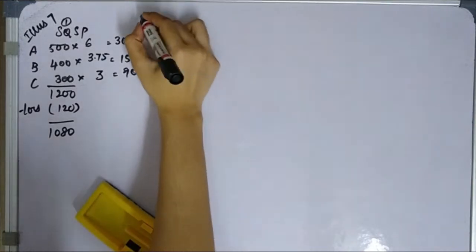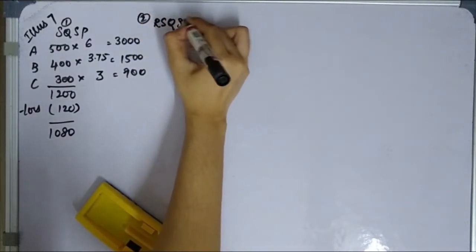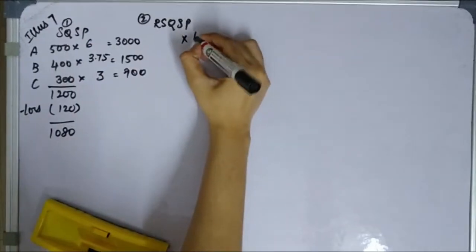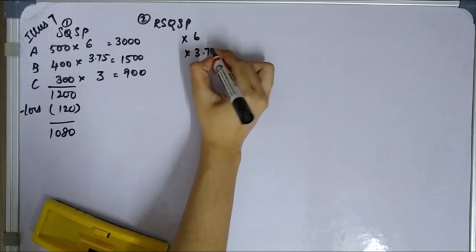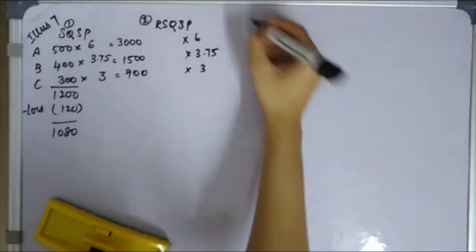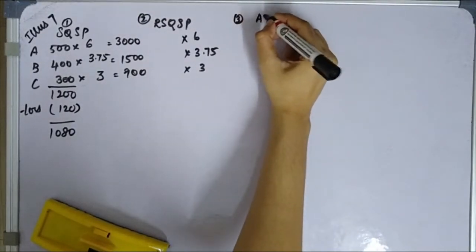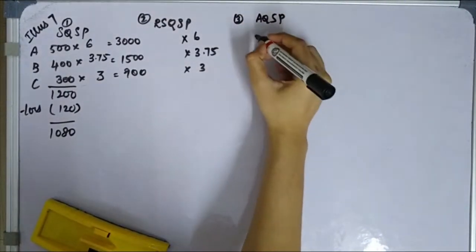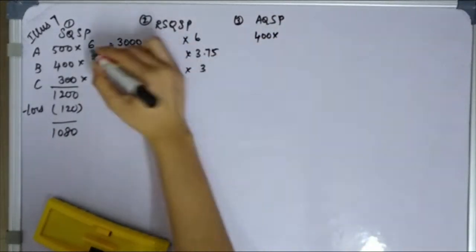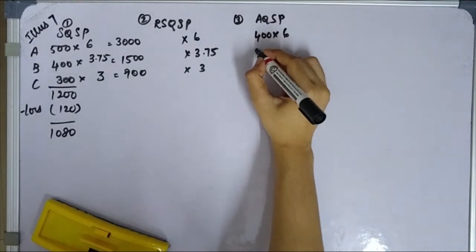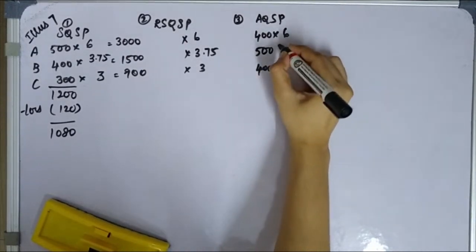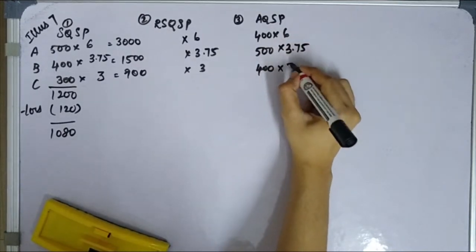Next, second one is RSQ SP. So 6 into, 3.75 into 3. Actual quantity in the question, 400 into SP 6, 500, and this one is 400 into 3.75, into 3.